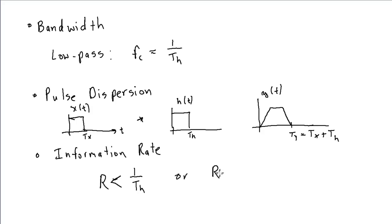Or, in terms of the bandwidth of our system, equivalently, we could say that we have to keep the information rate less than fc.